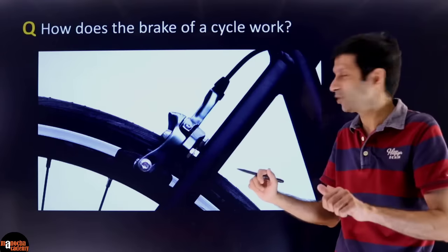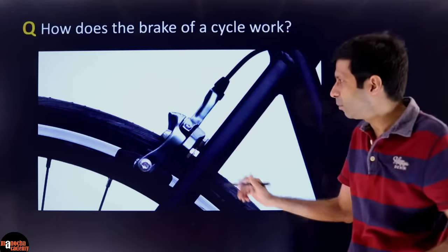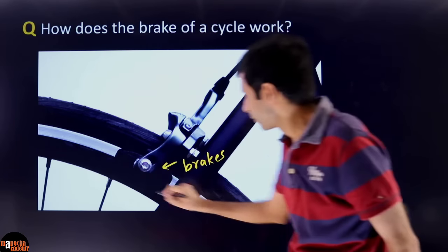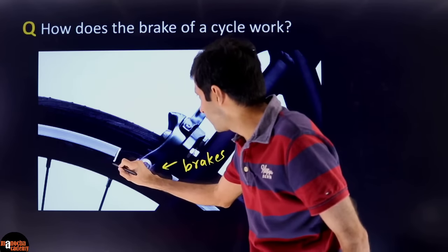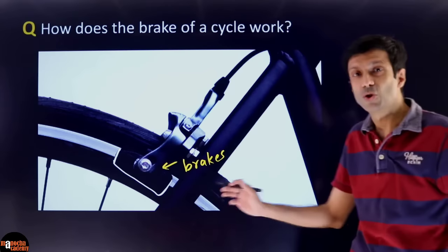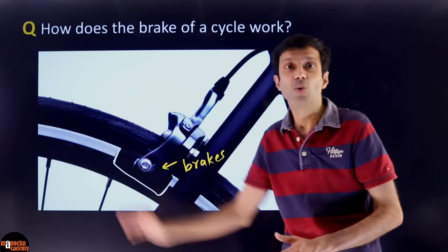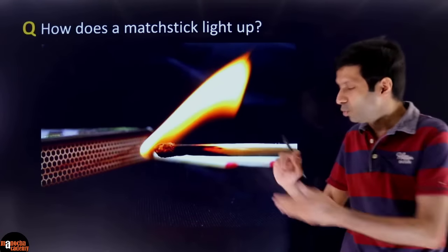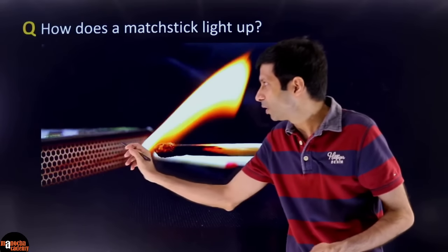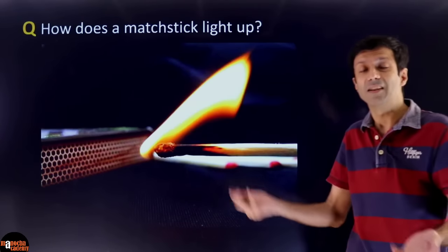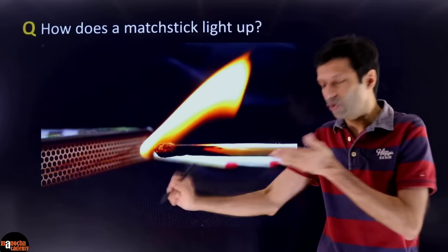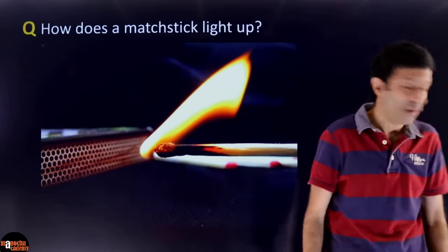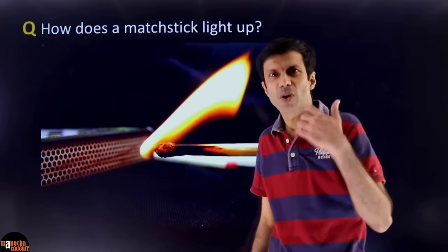I'm sure you know how to ride a bicycle. How do the brakes of a cycle work? When you're riding the cycle and you apply the brakes — you can see here, these are the brakes on the wheel — how do they stop the cycle wheel? And how does a matchstick light up? When you strike the matchstick on the matchbox, you see that it burns. The answer to all these questions is friction.